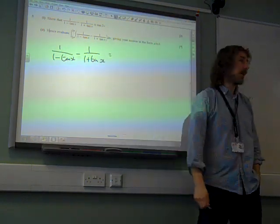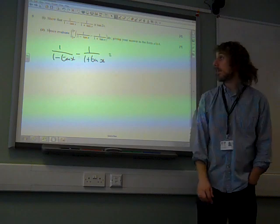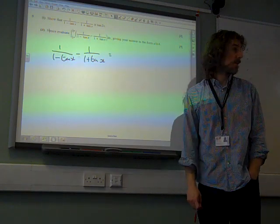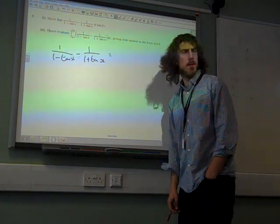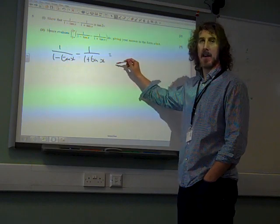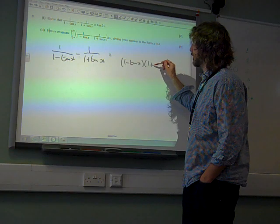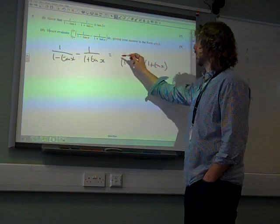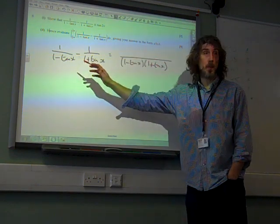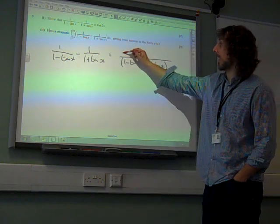So what we need to do is to put it over a common denominator and see what happens. And the common denominator would be 1 minus tan times 1 plus tan x. The first fraction we've multiplied by 1 plus tan x, top and bottom.